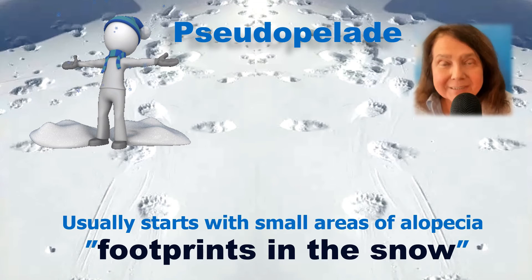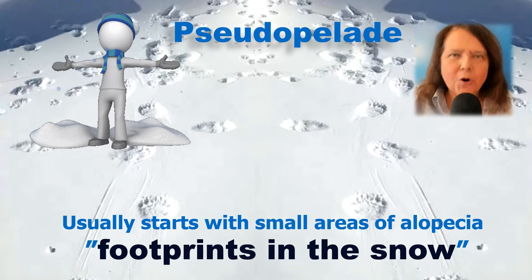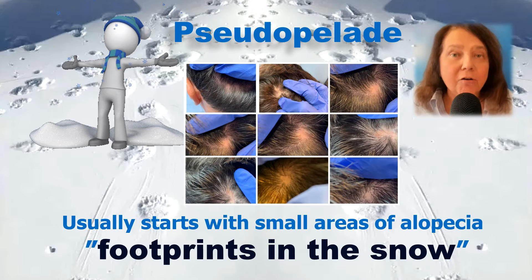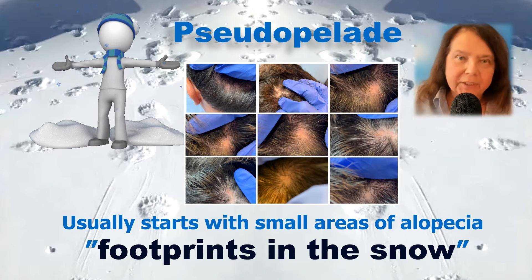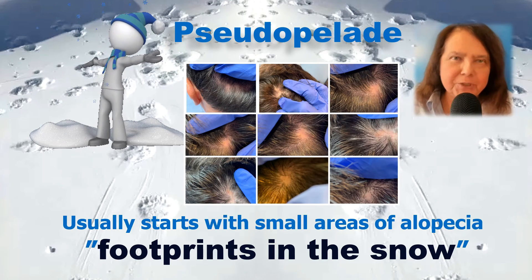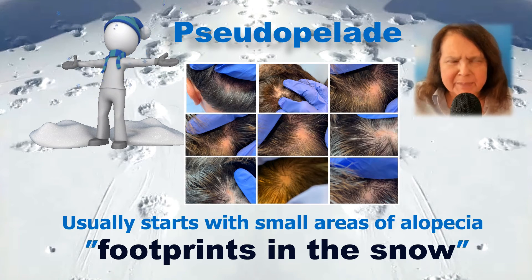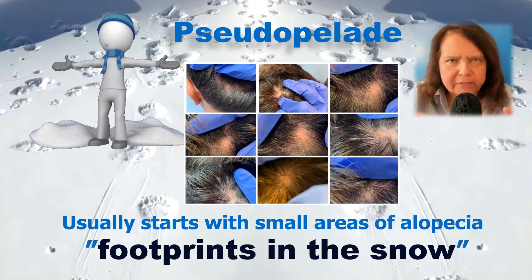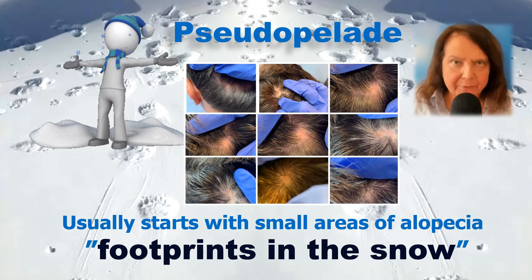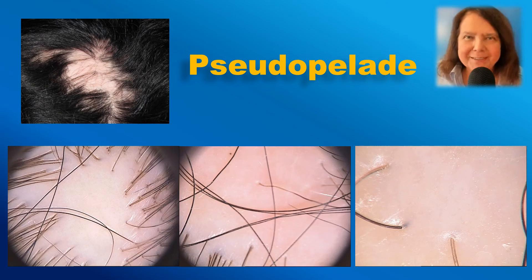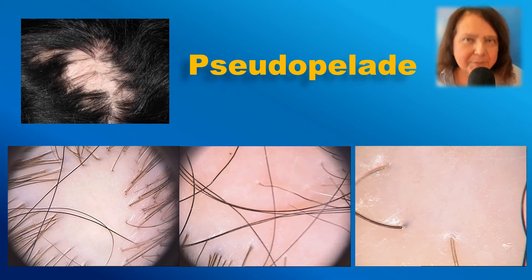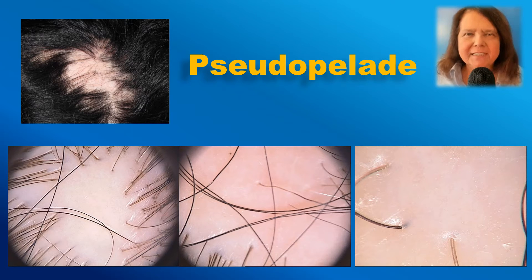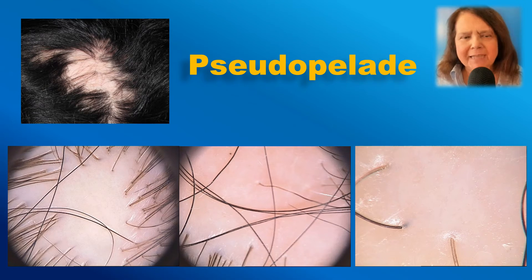Pseudopelade usually starts with very small areas of alopecia. Over time, these small areas become bigger and then become confluent to form even larger hairless areas. In trichoscopy there is really nothing specific, though sometimes we may see some very discrete features similar to classical lichen planopilaris.